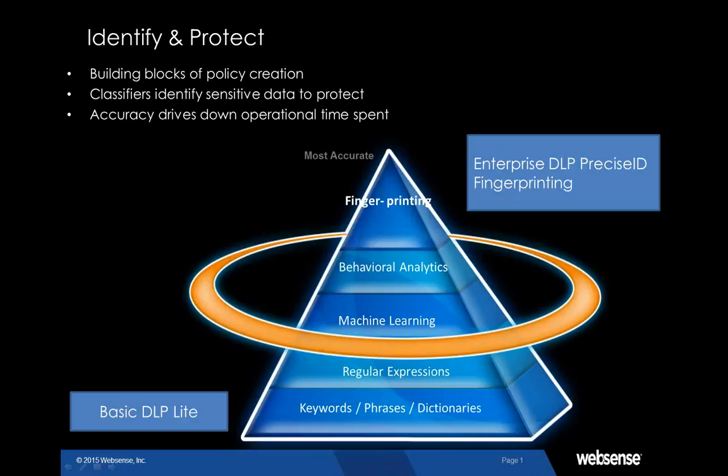Then you see behavioral analytics — besides the context and content of the data itself, we are looking at behavioral analysis: how the user is sending data, where they are sending it, what kind of data it is, and what format. Finally, at the top of the pyramid, is fingerprinting. For Websense, this is called Precise ID — a way to create a fingerprint, a hash of specific content, to recognize that content or part of it when it goes out.